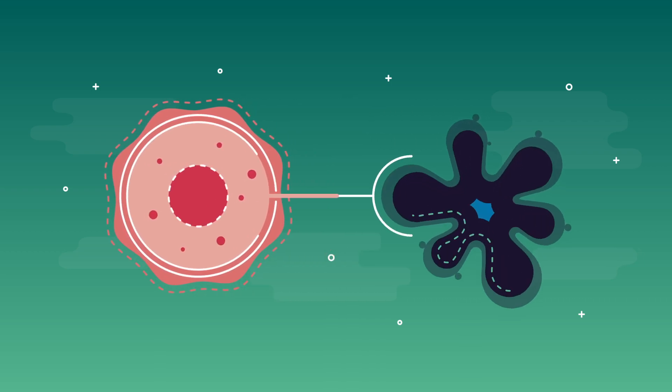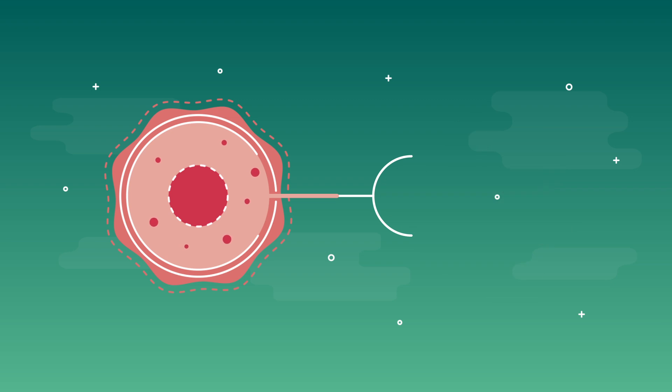In some illnesses, such as cancer, the immune cells can be upgraded to better recognize the rogue cells and kill them. These are known as CAR T cells.